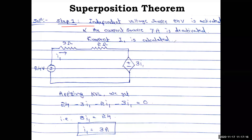With 7 amp open-circuited, the circuit becomes: 3 ohm, 24 volt, 2 ohm, and 3i1. The current previously called i is now called i1, because corresponding to this controlling variable this is the dependent voltage source.